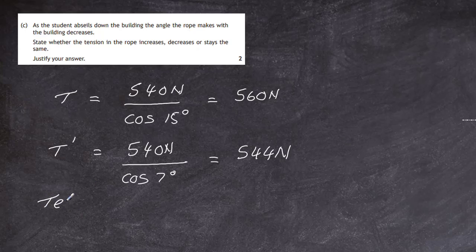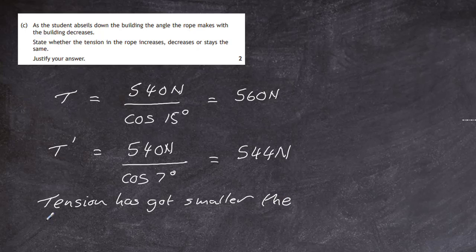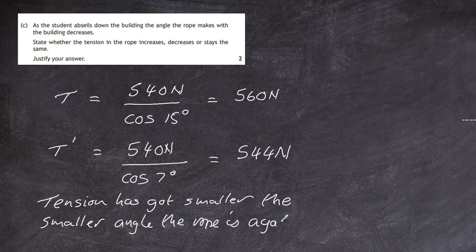So tension has got smaller. Now the tension has got smaller, the smaller the angle. The smaller the angle. And that's as proved that we have made our statements. Tension has got smaller, the smaller the angle the rope is with the wall. The rope is against the wall. And that's that bit done. So there's a statement and there's our maths to prove it. And that's how you go about doing this question.